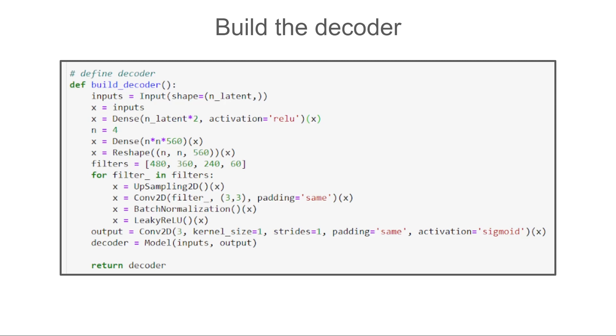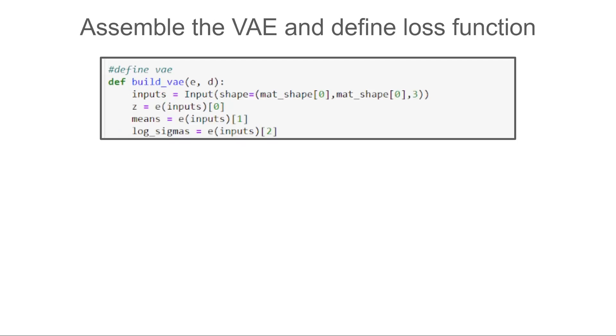Now comes the tricky part. The function gets an encoder model named E and decoder model named D. We first combine the encoder and decoder to build the variational autoencoder. Notice the syntax. Given the images as inputs, the encoder returns three outputs: latent vectors, means, and variances. We unpack each into a variable. We then use the latent vector as input for the decoder D. And finally, creates our variational autoencoder by chaining together the inputs and outputs.